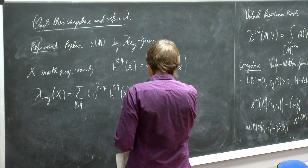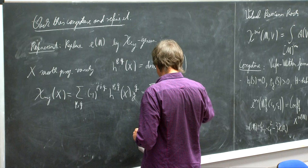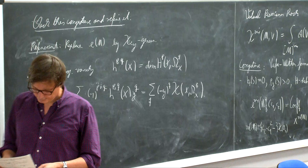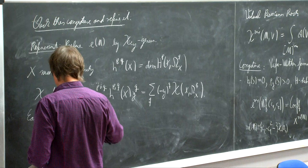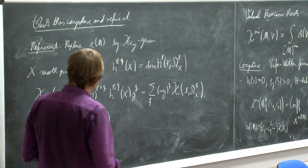This can also be written as the sum over all q of minus y to the q times the holomorphic Euler characteristic of X with the sheaf omega^q of X. It's easy to check that if I put y equal to 1 then I get the Euler characteristic. Now we want to consider a virtual version of this.